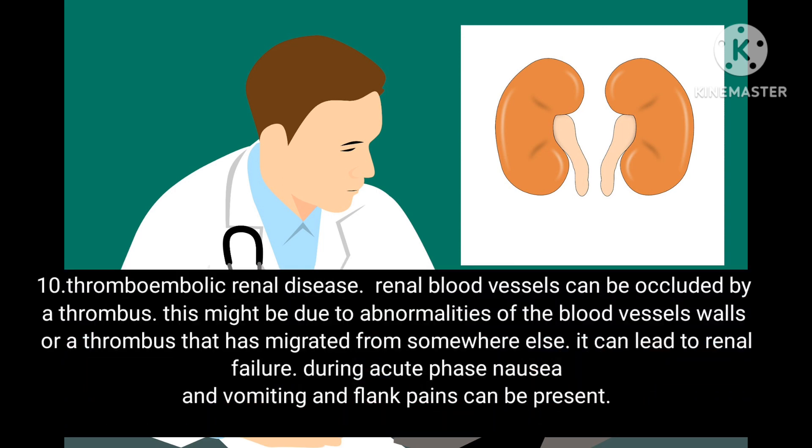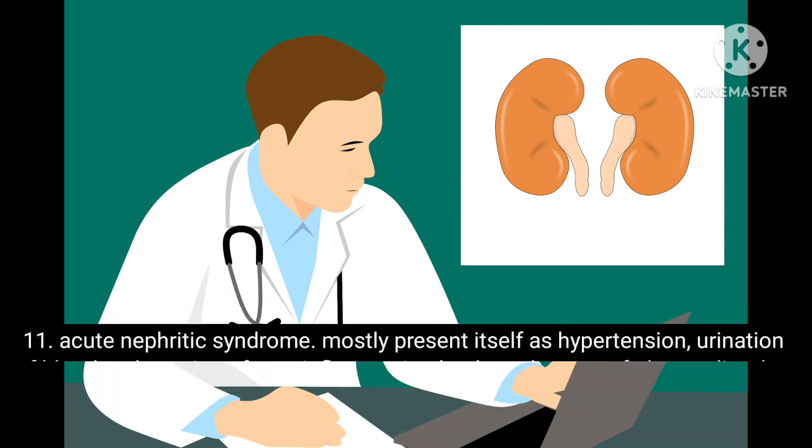Tenth, thromboembolic renal disease — renal blood vessels can be occluded by a thrombus, either due to abnormalities of the blood vessel walls or a thrombus that has migrated from somewhere else. It can lead to renal failure. During the acute phase, nausea, vomiting, and flank pains can be present.